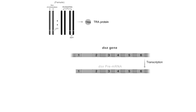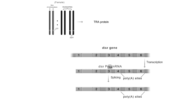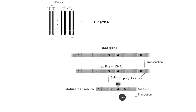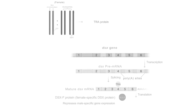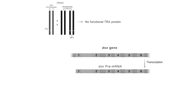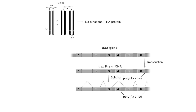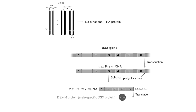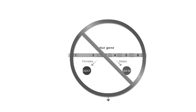TRA protein is also an RNA splicing regulator, and its target is the pre-mRNA of the doublesex, or DSX, gene. In females, the mature DSX mRNA encodes the DSXF protein, a transcription factor that represses male-specific gene expression in all cells, resulting in female-specific somatic cell differentiation. In males, the mature DSX mRNA encodes the DSXM protein, a transcription factor that represses female-specific gene expression in all cells, resulting in male-specific somatic cell differentiation. Knockout mutants of DSX display both male and female characteristics due to lack of repression of both male-specific and female-specific genes.